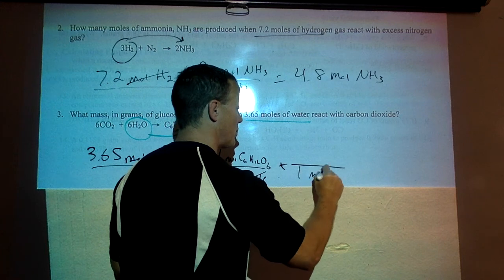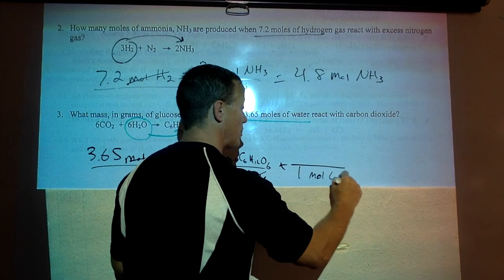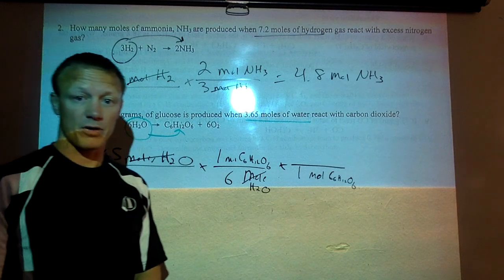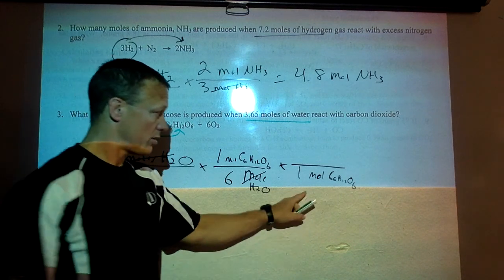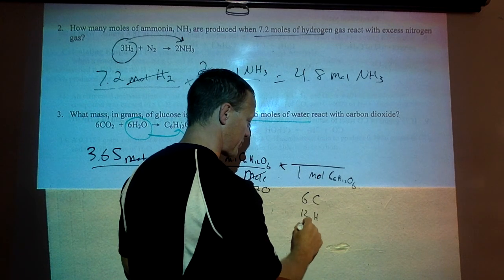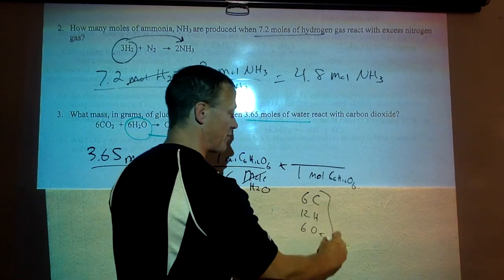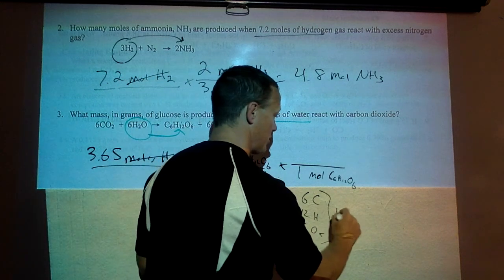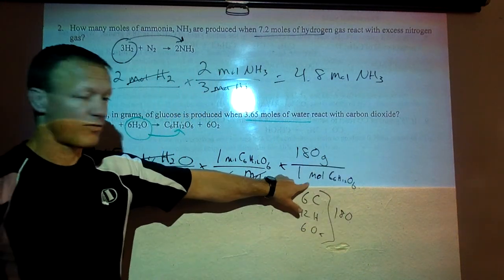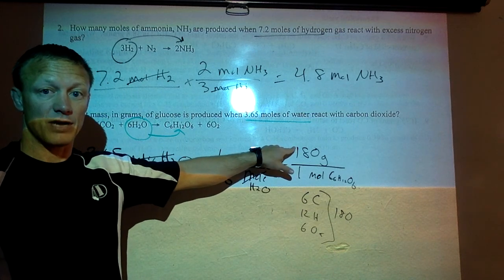We're going to add up what a mole of glucose is off the periodic table. So you got six carbons, 12 hydrogens, and six oxygen. If you add those up it's 180 grams. So a mole of glucose has a mass of 180 grams.